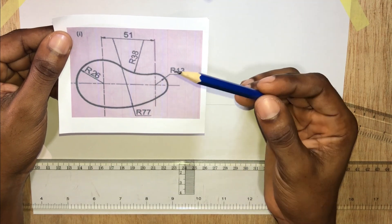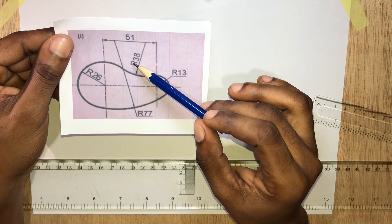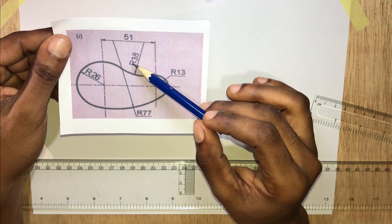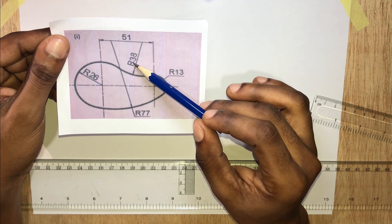For internal, you subtract. So 26 plus 38 should give us 64 millimeters, which is the same as 6.4 centimeters.